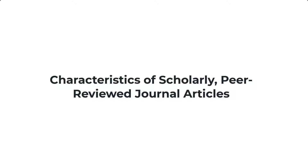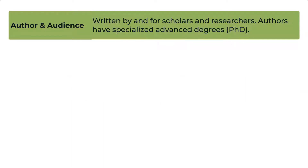Knowing the characteristics of scholarly peer-reviewed journal articles will help you to quickly identify them for your research. These articles are written by and for scholars and researchers. The authors have specialized advanced degrees like PhDs and are typically professors at universities. The author's affiliations are often listed at the beginning of the source, right after the author's name.